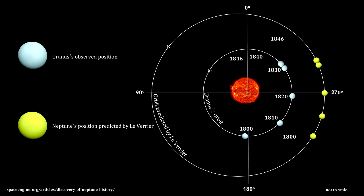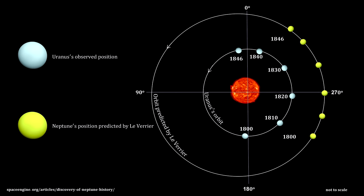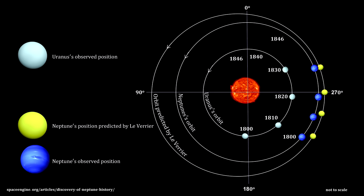Astronomer Urbain Laverrier went to work to try to discover this new planet. Early in 1846, he published calculations that came very close to where it actually was. On September 23rd of that same year, Johann Gall, an astronomer at Berlin Observatory, and a student, Heinrich-Louis de Arrest, found the new planet looking where Laverrier had placed it. This planet is now called Neptune.